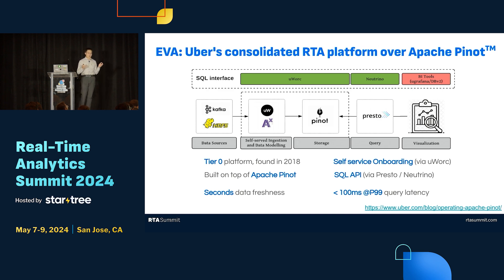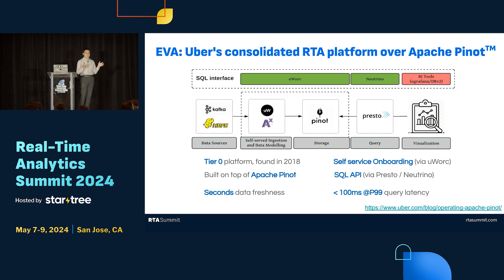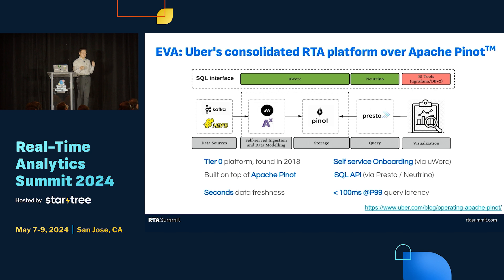We named our platform Eva. It's a consolidated RTA platform over Apache Pinot. This architecture shows our high-level design. One of the keywords here is this consolidated platform. We started the platform in 2018. At Uber, we tier our services by importance and reliability. Tier zero means the most critical platforms — given the importance of this domain, the Eva platform is tier zero.